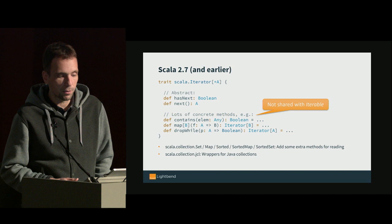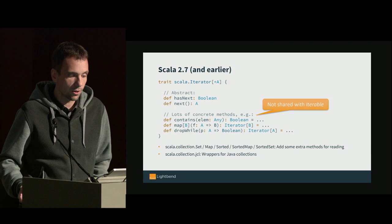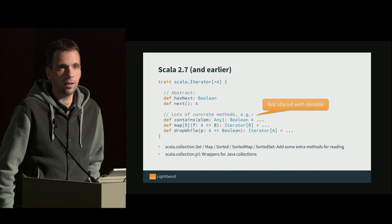We also have scala.collection.jcl, which are wrappers for Java collections to make Java collections look like Scala collections, except they don't have exactly the same semantics. In retrospect, that was considered not to be a good idea and was removed in the redesign.